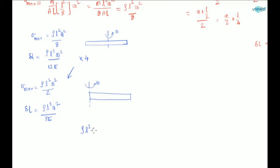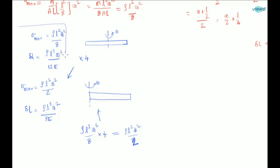So ρl²ω²/8 multiplied by 4 gives ρl²ω²/2, and similarly for elongation. You need to remember these formulas. You need not derive them all — just remember σ_max = ρl²ω²/8 and δl = ρl³ω²/(12E) for the center axis case, and multiply by 4 for the one-end case.